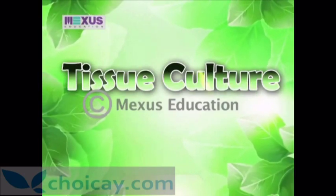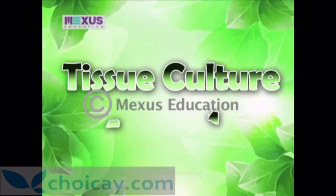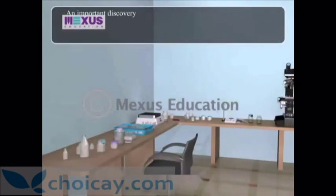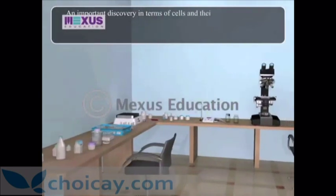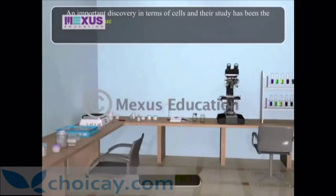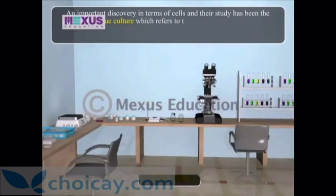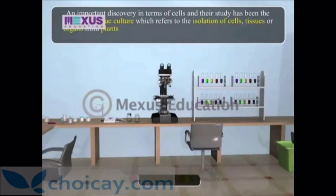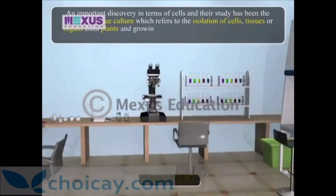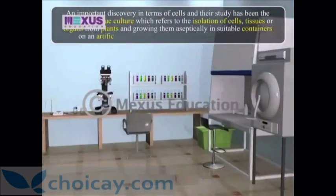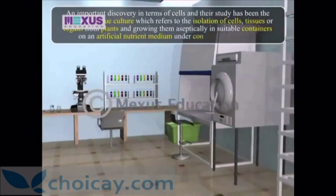Tissue Culture Part 1. An important discovery in terms of cells and their study has been the advent of tissue culture, which refers to the isolation of cells, tissues or organs from plants and growing them aseptically in suitable containers on an artificial nutrient medium under controlled conditions.